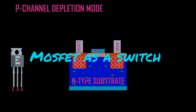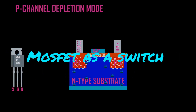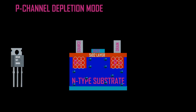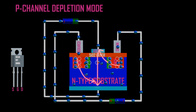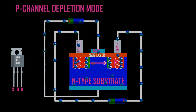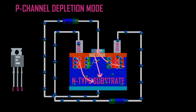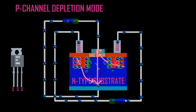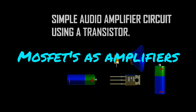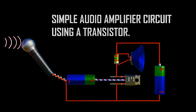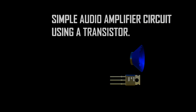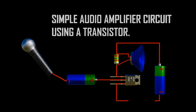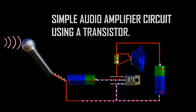MOSFET can be used as a switch to control the flow of current. When the gate voltage is zero, the channel is not formed and no current flows between source and drain. When a positive voltage is applied to the gate of an N-channel MOSFET, or a negative voltage to the gate of a P-channel MOSFET, the channel is formed and current flows. MOSFET can also be used as an amplifier to increase the strength of a signal. When a small voltage is applied to the gate it can produce a large current in the channel between source and drain, making MOSFET very useful in electronic circuits.